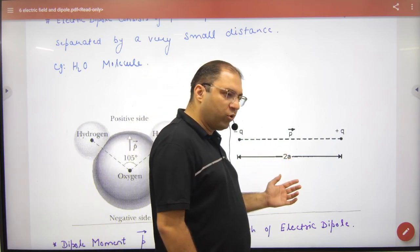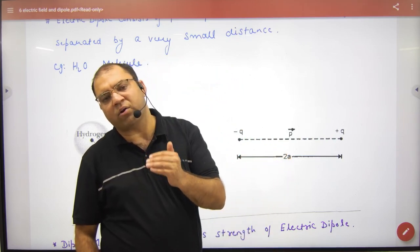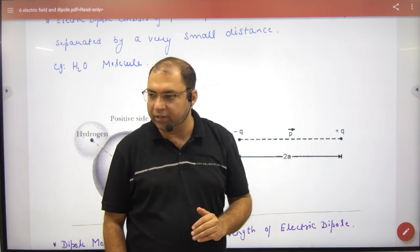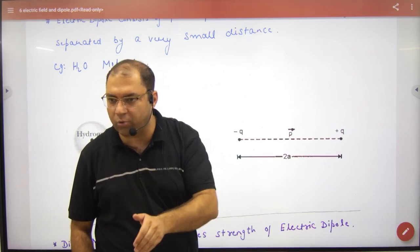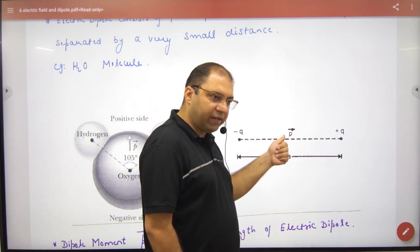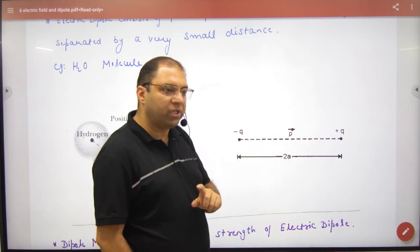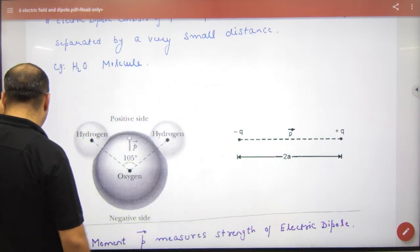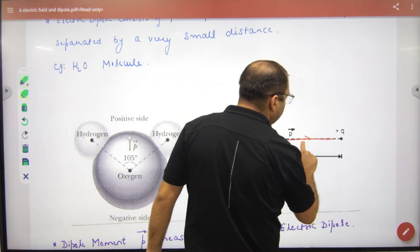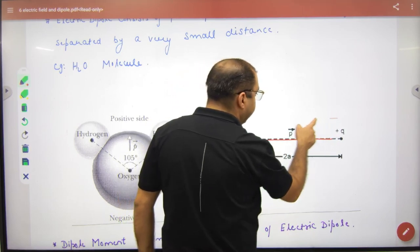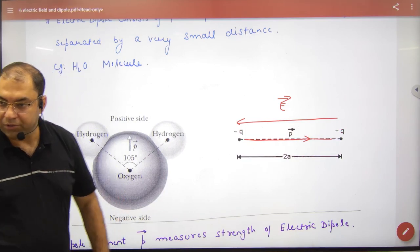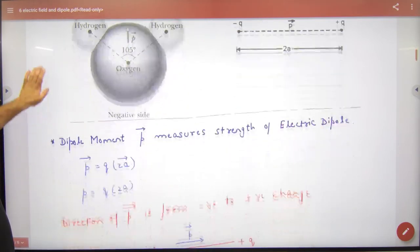Dipole in common term used, which is dipole moment, electric dipole moment, which is symbol P. P is a vector quantity. Dipole moment symbol P vector, direction is always negative to positive. Jabki electric field direction is always from positive to negative charge, ulta hotta hai. Thik, to dipole moment hai kya?